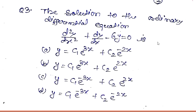Question number three is related to the differential equation. The solution to the ordinary differential equation d²y/dx² + dy/dx − 6y = 0 is — and four options are provided for this question.